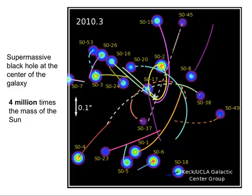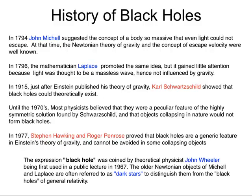Let me back up and talk more about the history of black holes. John Mitchell in 1784 was the first we know of to suggest this idea. In 1796, the mathematician Laplace promoted the same idea. But this idea never gained much traction because by that time the idea had propagated through the community that light was in fact a wave — and since light was a wave, it didn't have mass, and therefore it didn't react to gravity, so maybe this didn't happen.